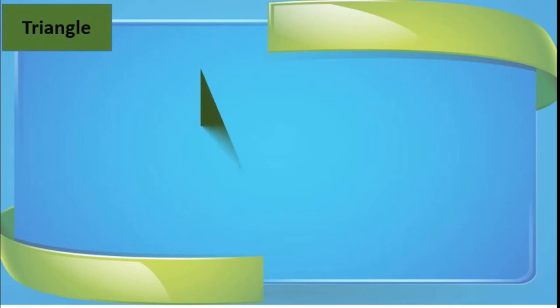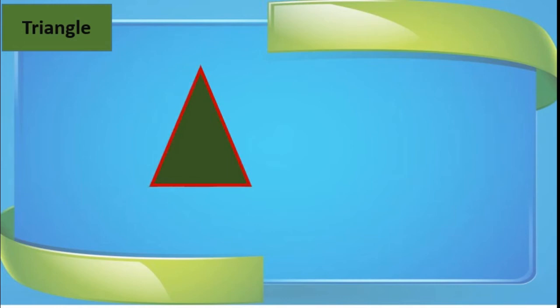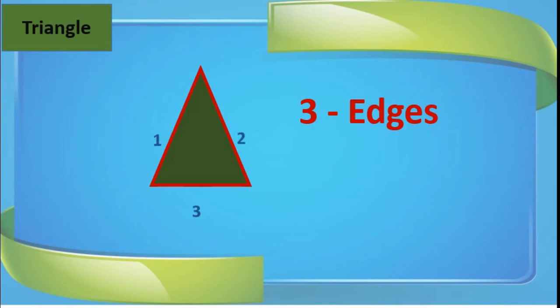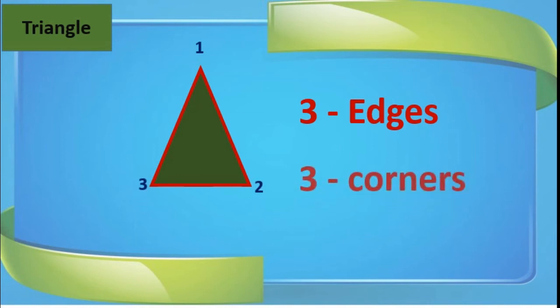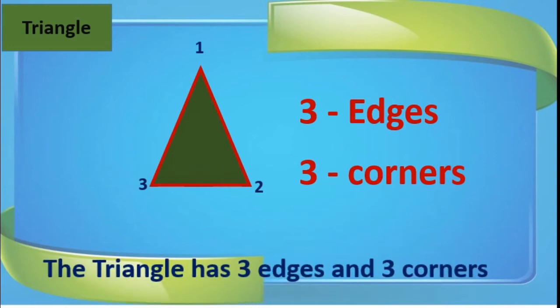The next thing is triangle. This is a triangle. We will see the edges — it has one, two, and three. So we can write three edges. How many corners? Let me count — one, two, three. It has three corners. So the statement is: the triangle has three edges and three corners.